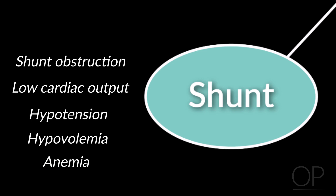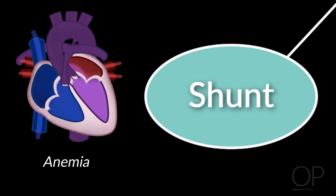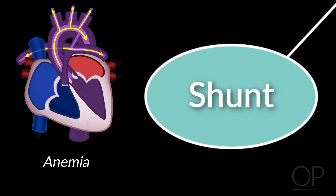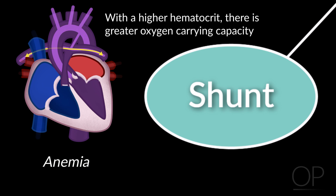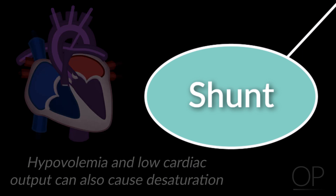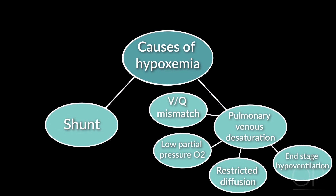Anemia is an odd one on the list, but I categorize it as decreased effective pulmonary blood flow. Remember that in a single ventricle circulation, each time the heart pumps, the blood is choosing to go to the body or the lungs. With a higher hematocrit, more of that blood going to the lungs can get oxygenated, which should improve your saturations and your oxygen delivery. Hypovolemia and low cardiac output similarly can cause desaturation from decreased effective pulmonary blood flow and potentially increase risk of clot developing in the shunt. We typically do not worry about the other three causes of hypoxemia, but that doesn't mean they don't happen — always keep them in the back of your mind.